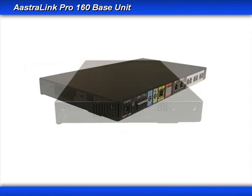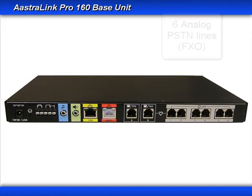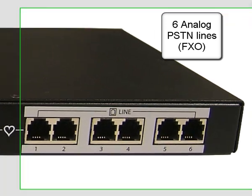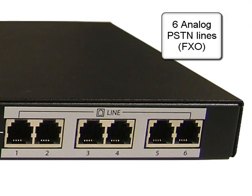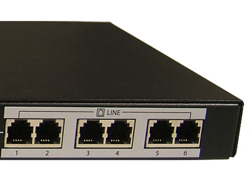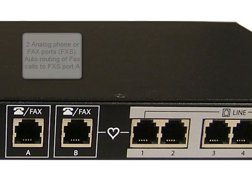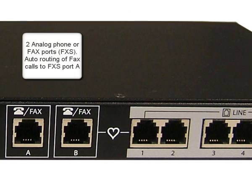The Astralink Pro 160 supports up to six analog PSTN lines, also known as FXO ports. Each FXO port is equipped with caller ID detection and G.168 echo cancellation. The system comes with two standard analog phone ports, also known as FXS ports. These two ports are most commonly used to support fax machines. The Astralink Pro 160 has been engineered to auto-detect inbound fax calls on any FXO port and route that fax call to FXS port A.